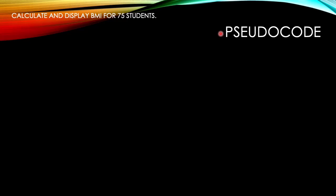Our problem statement for this example is calculate and display BMI for 75 students. For how many students? 75. So we use the control structure looping with counter control.